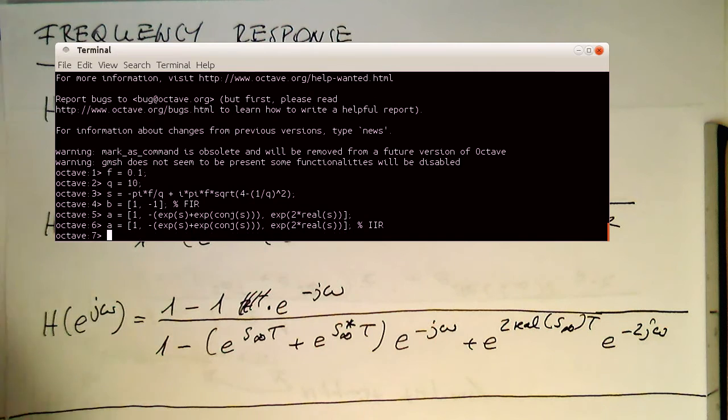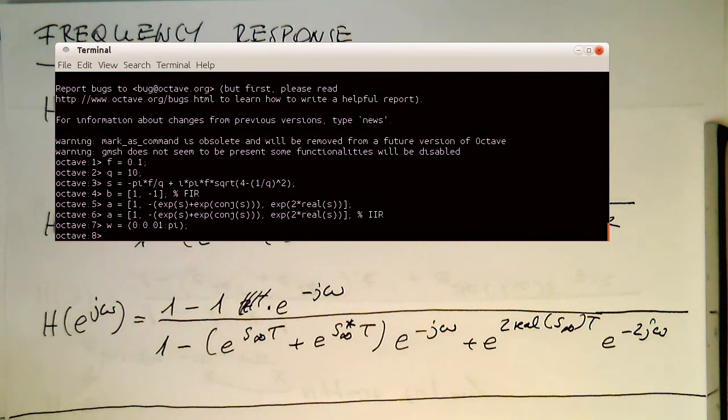So now for the frequency response we just need to define our omega here. So that's running from 0 in steps of 0.01 to pi. So that's our frequency vector.